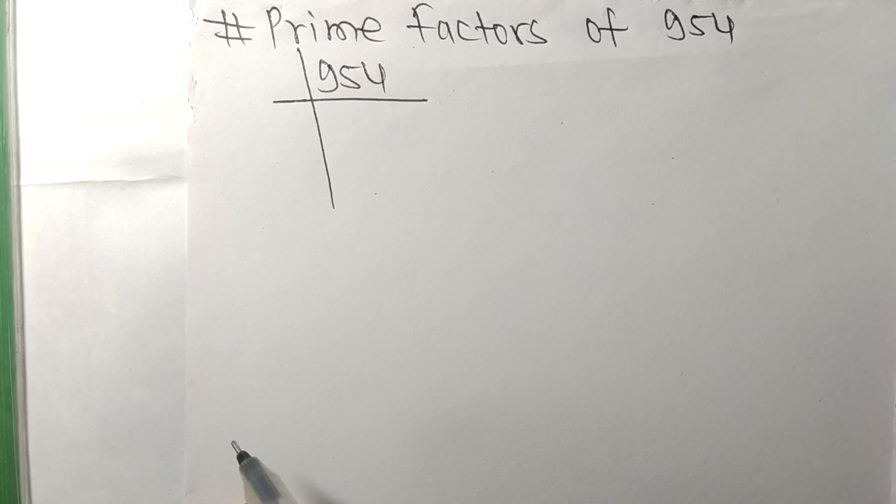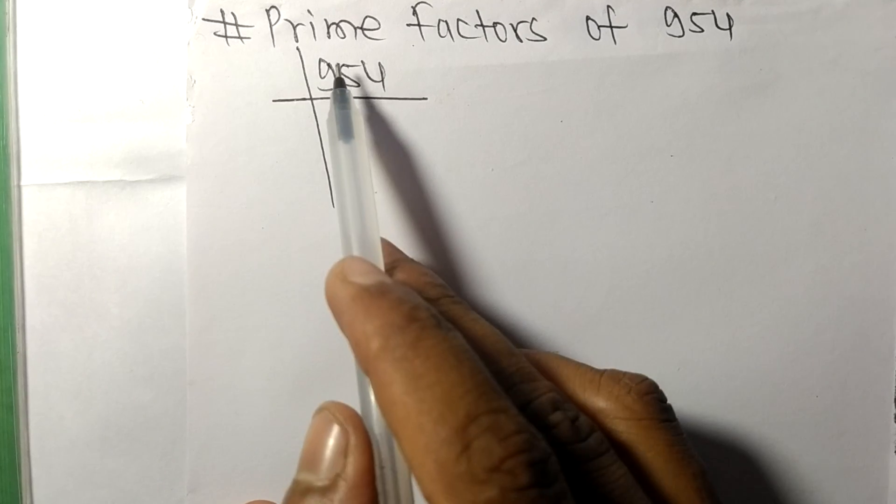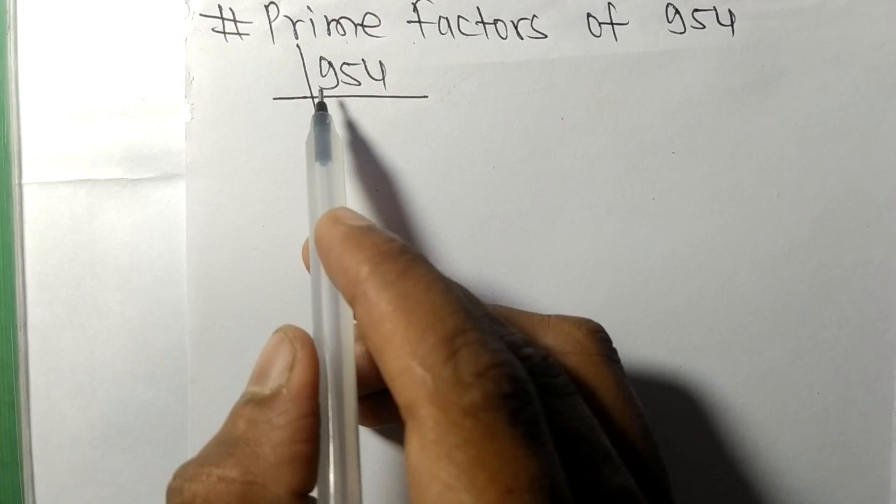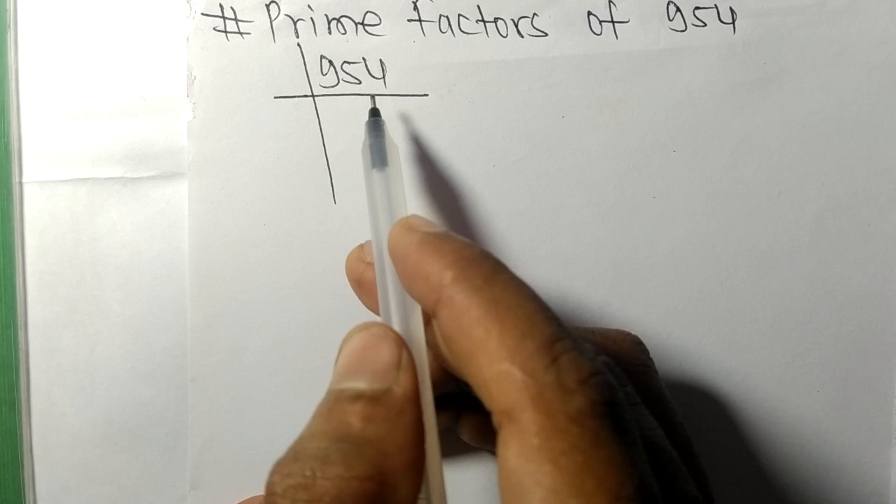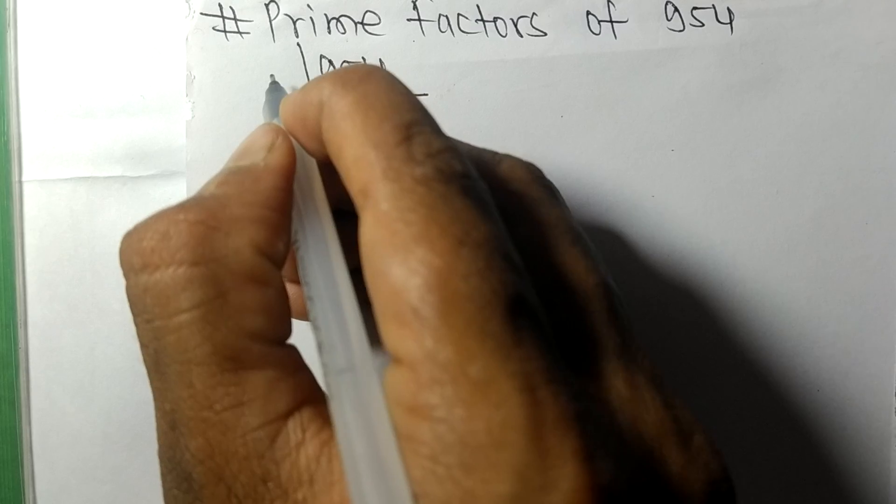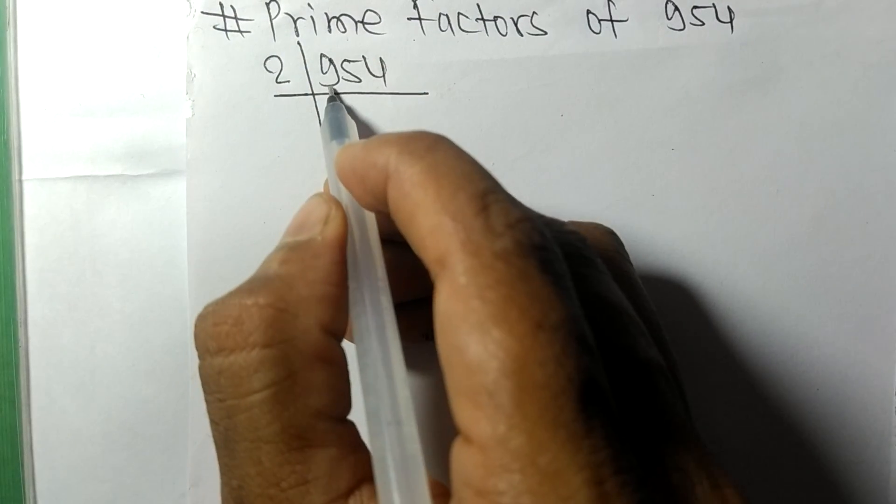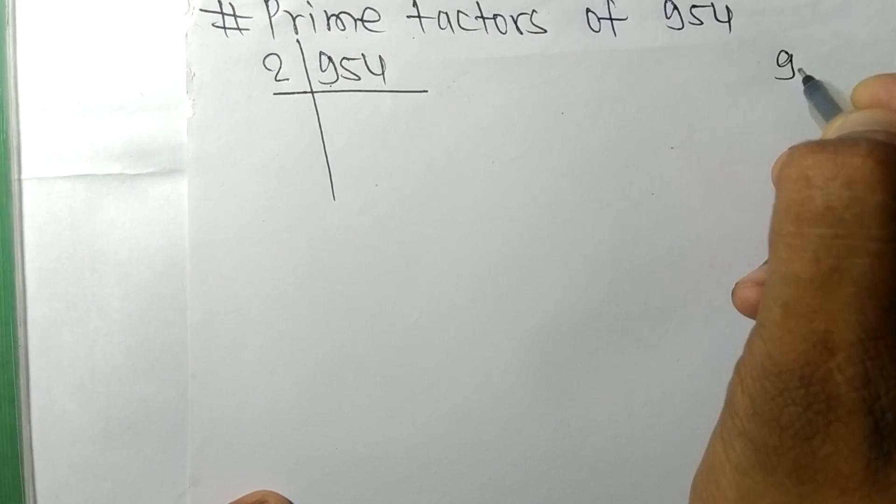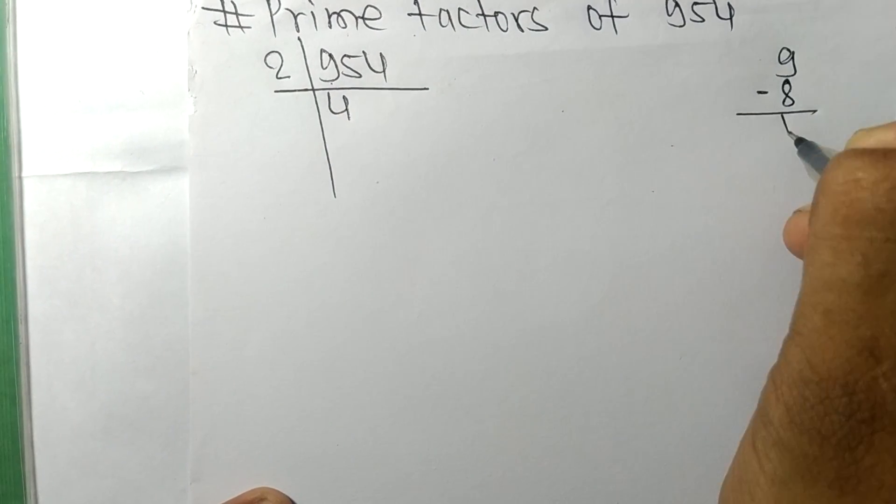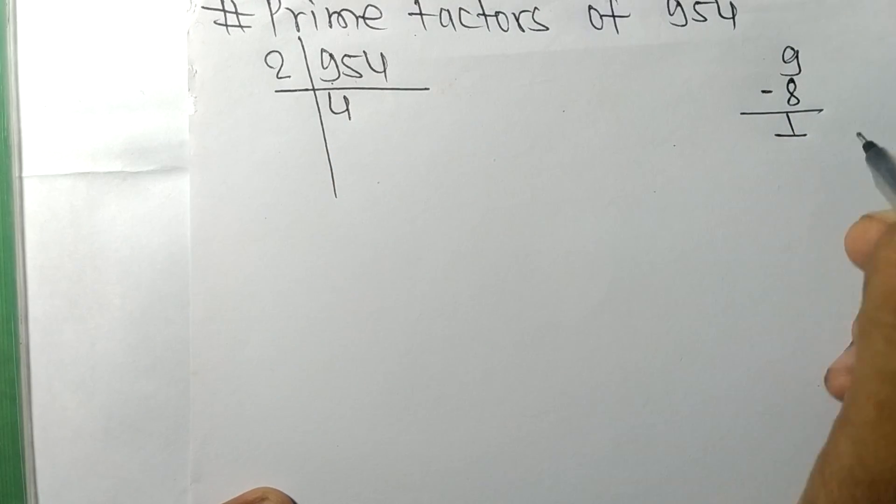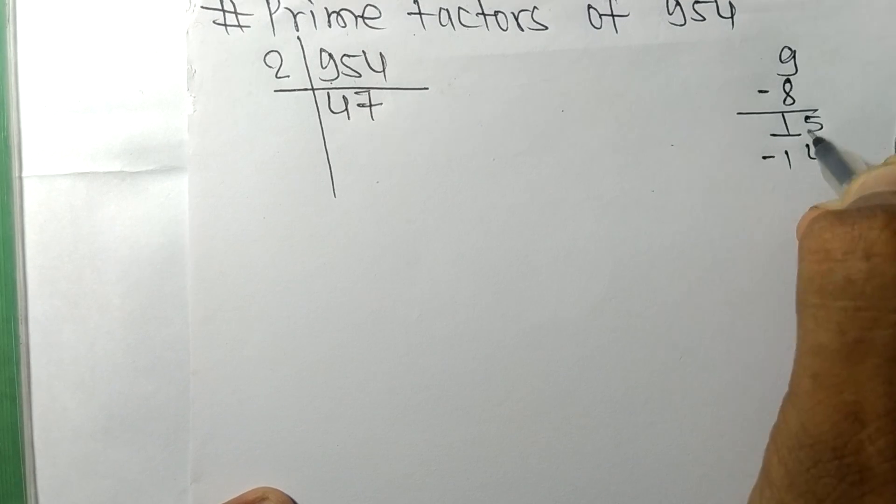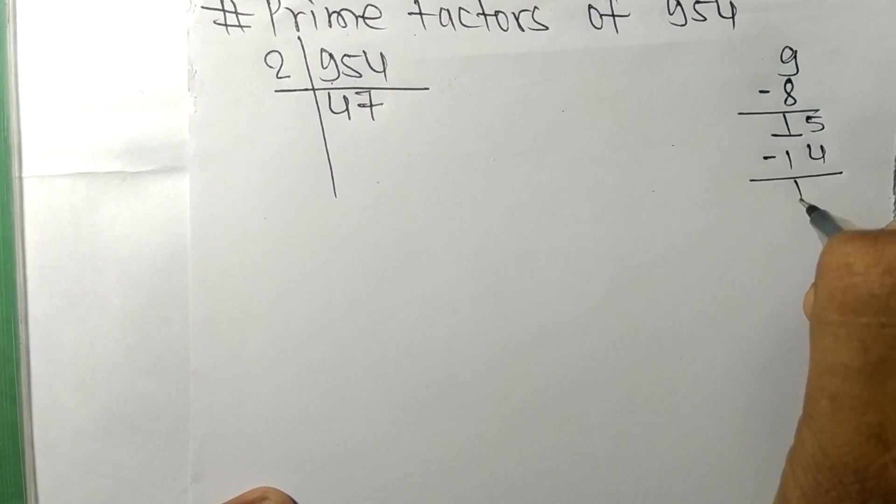So today in this video we shall learn to find the prime factors of 954. 954 contains an even number at last, so it is exactly divisible by 2. First we have 9, so 2 times 4 means 8. On subtracting we get 1. This 5, 15, so 2 times 7 means 14. On subtracting we get 1.